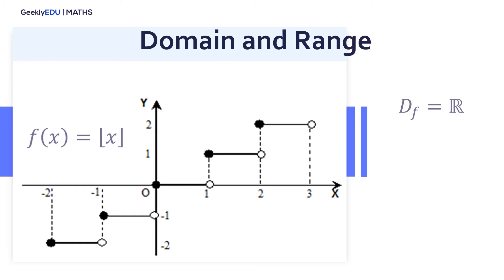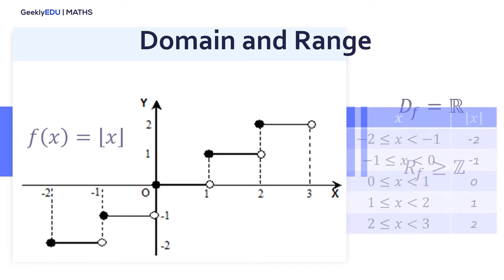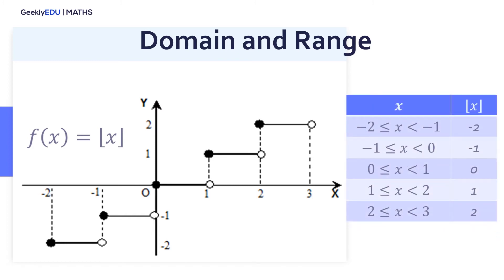Let's use the graph of the function f(x) equal to the greatest integer of x. From this graph we can see that the domain is all the real numbers and the range is all the integer numbers. When x takes the value of a non-integer, the function gives us an integer. For example, when x is greater than or equal to −2 but smaller than −1, the function gives us −2. When x is greater than or equal to −1 but smaller than 0, the function gives us −1, and so on.